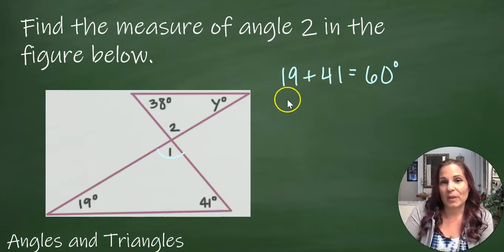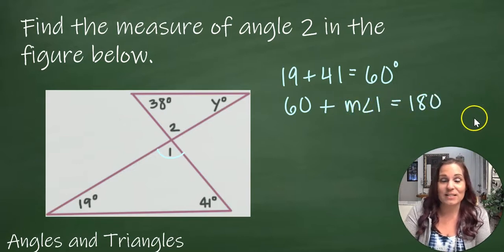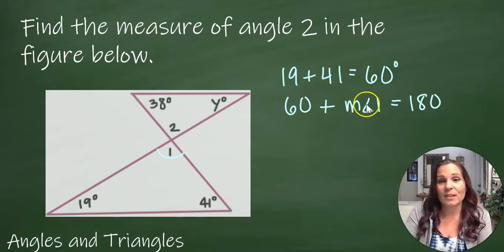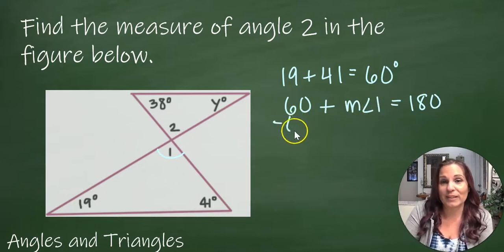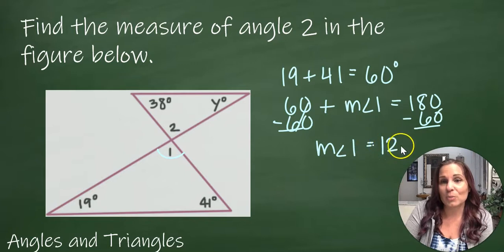And I know that the three angles have to add up to be 180. So I know that the angles that I've got plus the angle that I'm missing, let's put measure angle 1, is equal to 180 degrees. So to find the measure of angle 1, I'm going to do 180 minus 60, so the measure of angle 1 is 120 degrees.